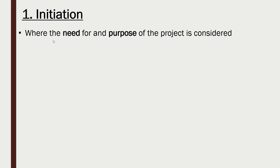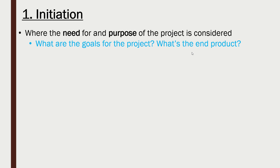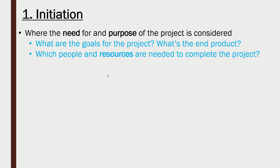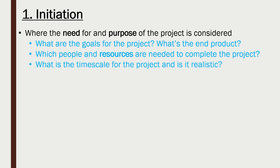During initiation, we consider the need for and the purpose of our project — why we are doing it and what the intended goal is. What are the goals? What's the end product going to be? Are we going to make something, deliver some infrastructure, or some service? We also consider what people and other resources we need to complete the project. A resource is anything we need — money, personnel, staff, materials, expertise, etc. We also look at what the timescale is going to be and whether it's realistic.